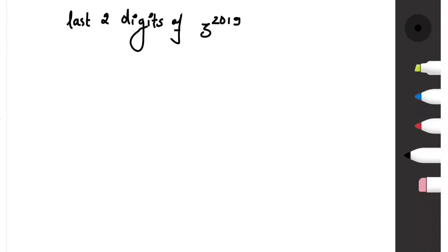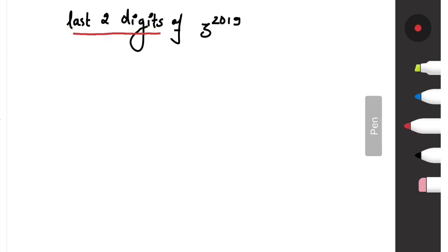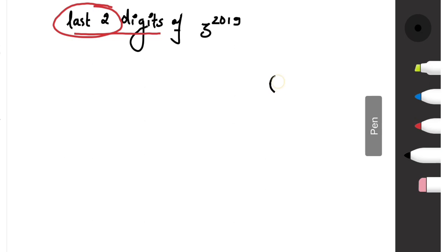Hello everyone. In today's number theory question, we have to find the last two digits of 3 to the power 2019. In our previous videos we discussed finding the last unit digit — I will provide the link in the description. For last two digits we will use mod 100.